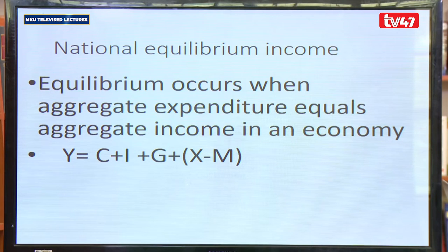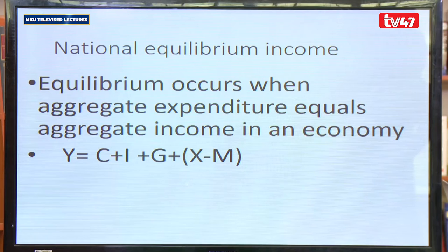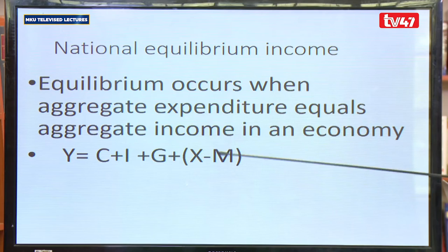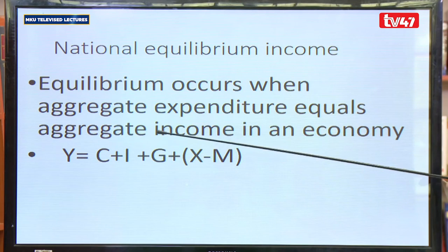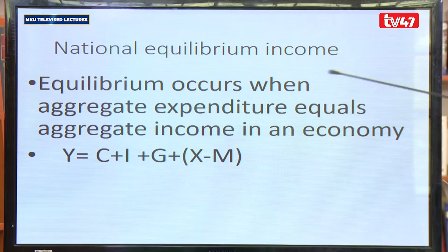There is a national equilibrium income, of which we say equilibrium occurs at the point where aggregate expenditure is equal to aggregate income. Y represents income or output. The total income should be equal with the total expenditure. These are the four sectors: there is consumption expenditure by the household, investment expenditure by the firms, government expenditure by the government, and the rest of the world spending on exports and imports. They are supposed to be equal to each other.